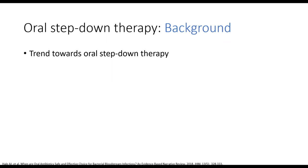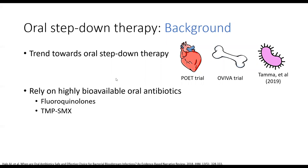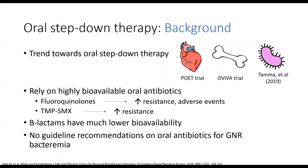Over the past few years, there's been a trend towards using oral step-down therapy for various infections historically treated with IV antibiotics. For example, the POET trial looked at oral antibiotics in endocarditis, the OVIVA trial in bone and joint infections, and other trials looked at oral antibiotics in GNR bacteremia. However, these studies relied on highly bioavailable oral antibiotics such as fluoroquinolones and bactrim. Over time, there's increasing bacterial resistance to these antibiotics, and with fluoroquinolones in particular, there have been some concerns for adverse events. Beta-lactams as a whole have much lower bioavailability, and currently there are no clear guideline recommendations on whether oral antibiotics can be used for GNR bacteremia.